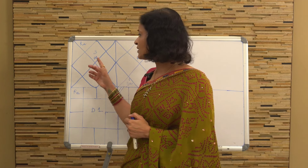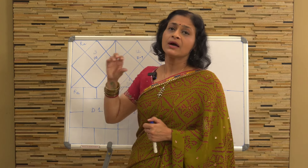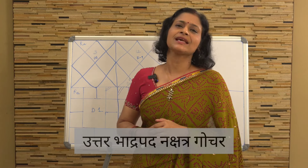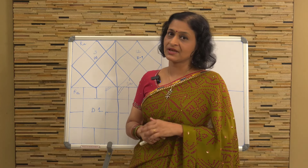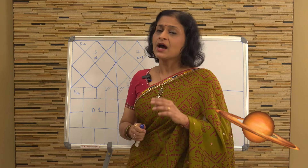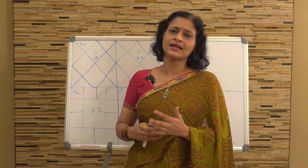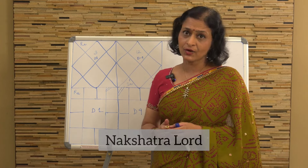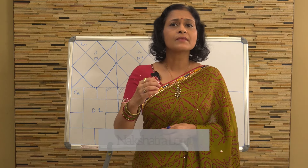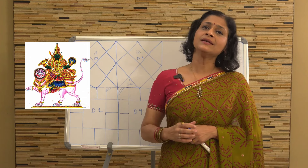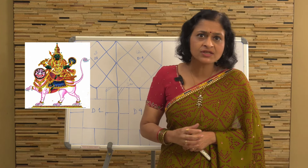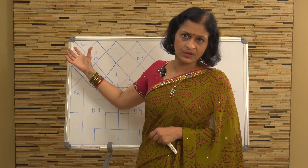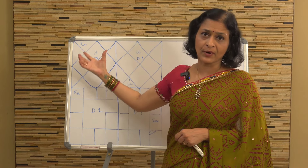Now, when we are talking about Rahu, Rahu is transiting through the Uttarabhadrapada nakshatra which is, in the Vimshotri Dasha scheme of things, the nakshatra of Saturn. Saturn gets involved as the nakshatra lord. We all know that Rahu is the planet that wants to teach us a lot of things, so there is a lot of learning with respect to Uttarabhadrapada that is important for us.